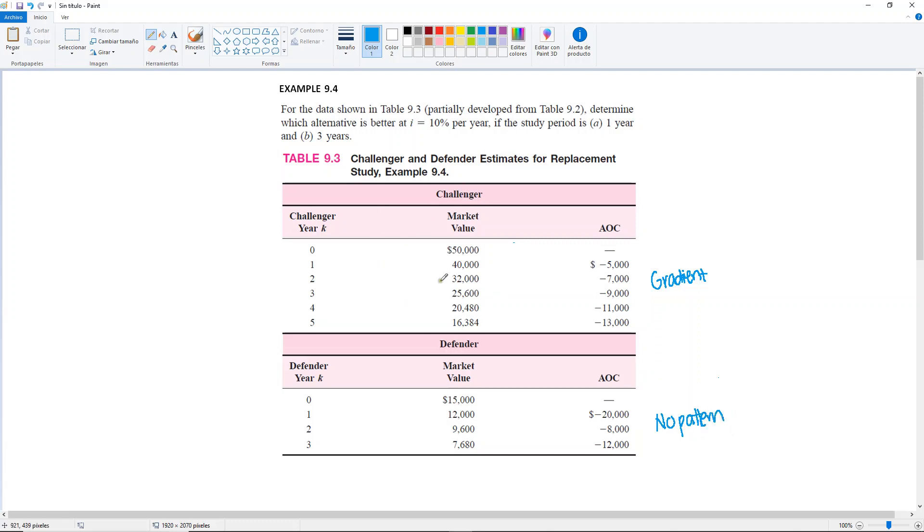In this table, they present a single column for the market value. But whatever amount you have in year 0 will be your P. And then the rest are going to be S1,